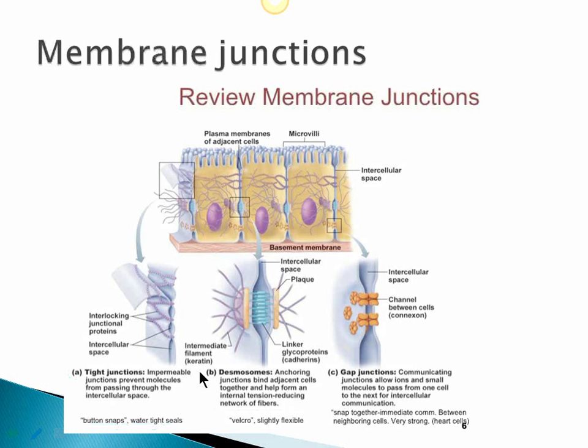Now let's look at membrane junctions. Most cells in the body are closely bound to each other, except for a few that migrate like sperm cells or red blood cells. When cells are bound to each other, we get cell junctions, also known as membrane junctions. There are three types. The first is called a tight junction — as the name suggests, they are impermeable and do not allow substances to pass from the extracellular space into the cell.